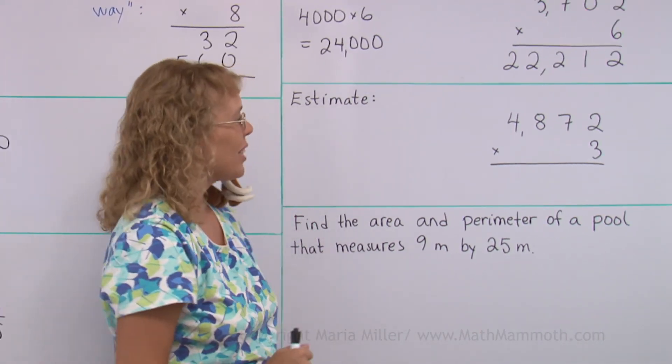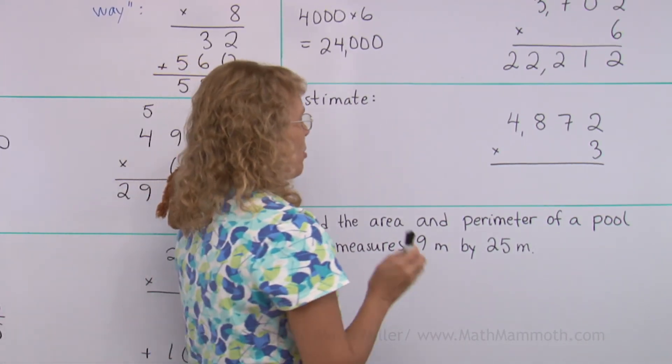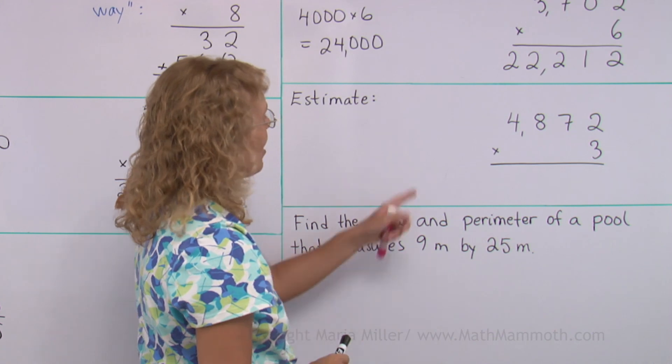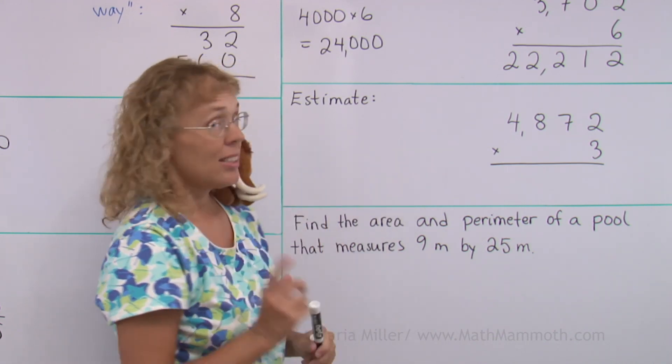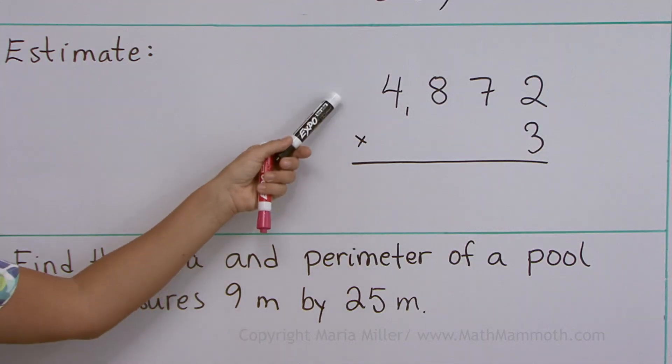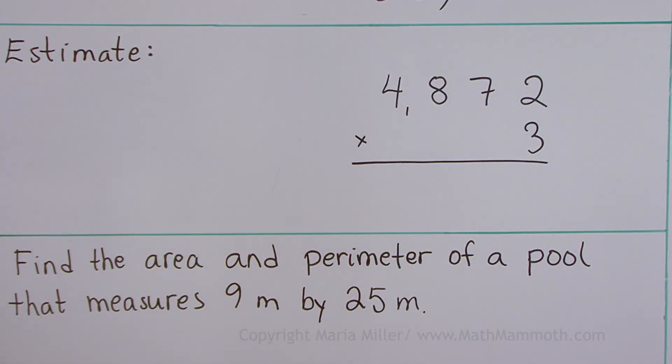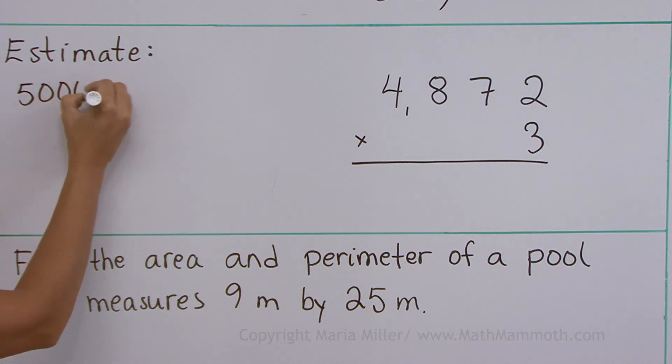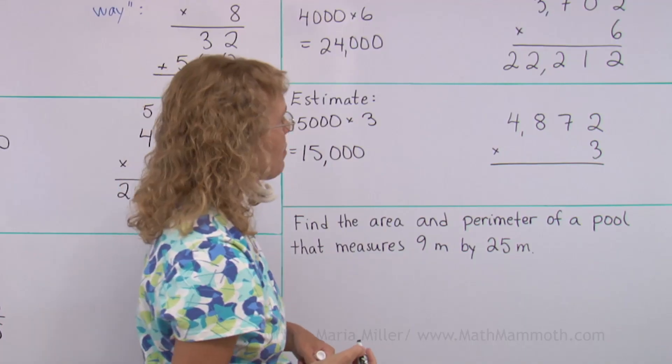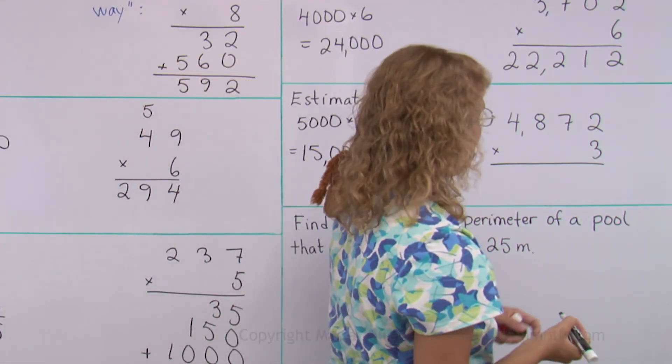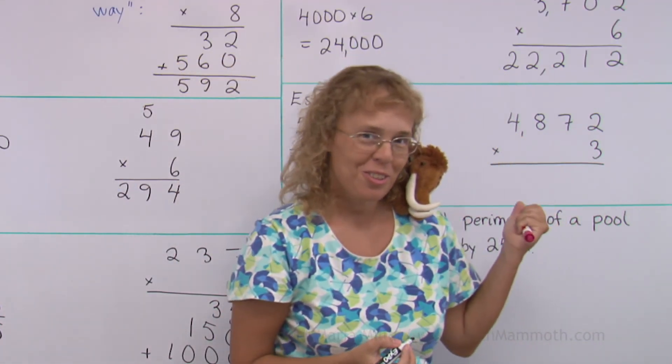Just one more problem for this lesson. One more multiplication like that. 4,872 times 3. Let's estimate first. Round this number to the nearest thousand. So we get 5,000 times 3. 15,000 is our estimate. Now, you can try it on your own before I do it.